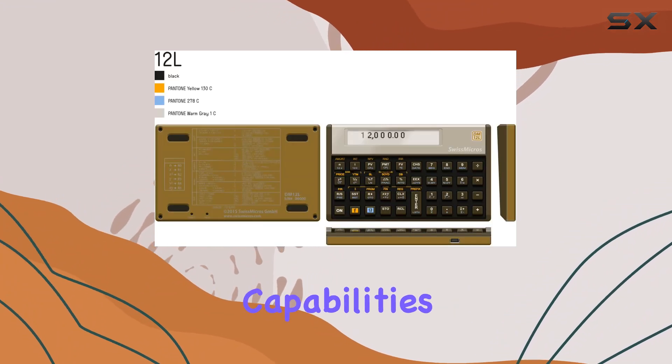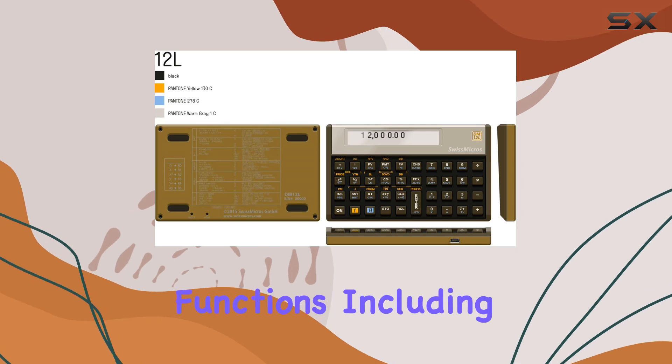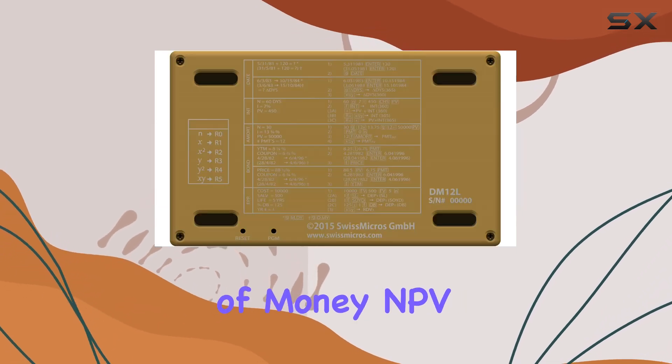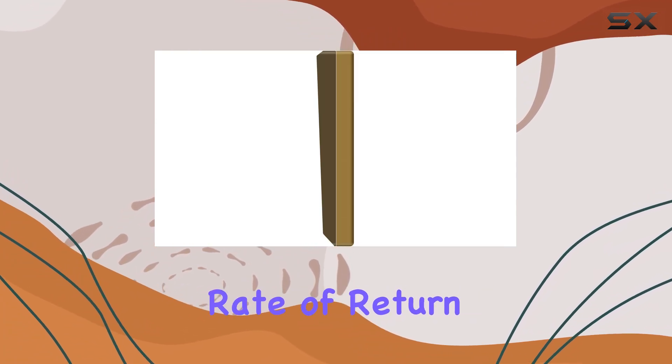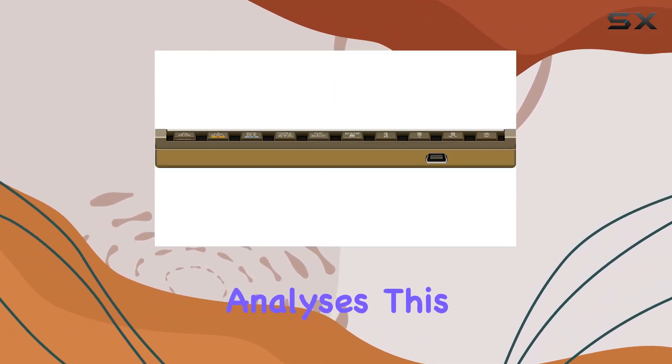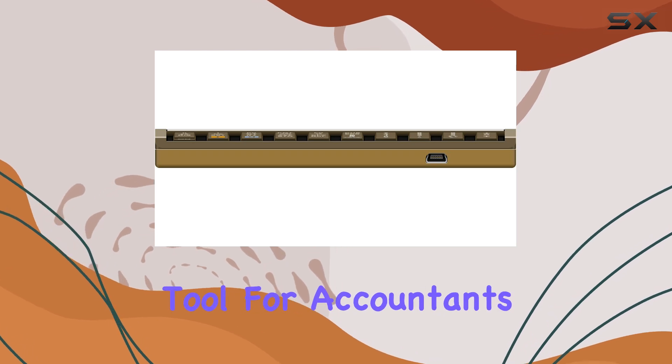One of the standout features of the DM12L is its financial calculation capabilities. It covers a wide range of functions including TVM (Time Value of Money), NPV (Net Present Value), IRR (Internal Rate of Return), and various other cash flow analyses.